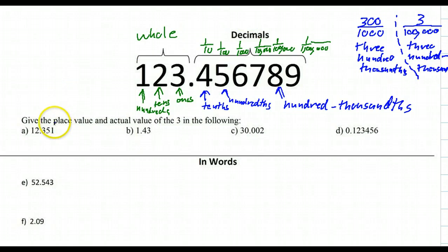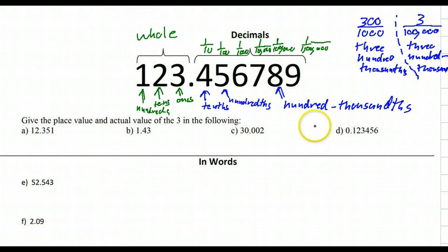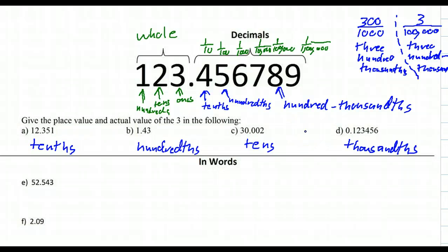Tell me what the place value is in words for each of these numbers — focus on just the three. Hit pause and tell me what they are. You should have gotten tens, hundreds, tens, and thousands. If you notice, all of your decimals have to end in 'THS' because they are fractions. If you're talking about a place value in the whole part, they're not fractions so they don't have that 'THS' at the end.